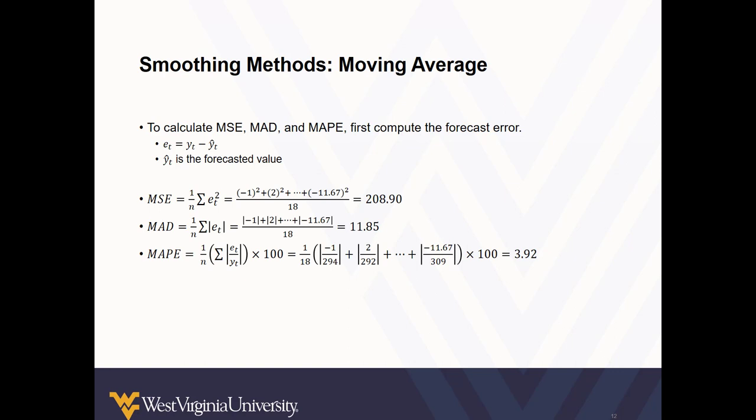MAD, or the mean absolute deviation, looks at the absolute value of the error multiplied by 1 over N. And the mean absolute percentage error, or MAPE, looks at the absolute value of the error divided by the observed value multiplied by 1 over N.